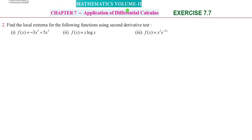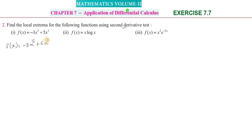Hi friends, greetings from Success Education Academy. 12th Maths, Exercise 7.7, question number 2: find the local extrema for the following function using the second derivative test. The first function is f(x) = -3x⁵ + 5x³.